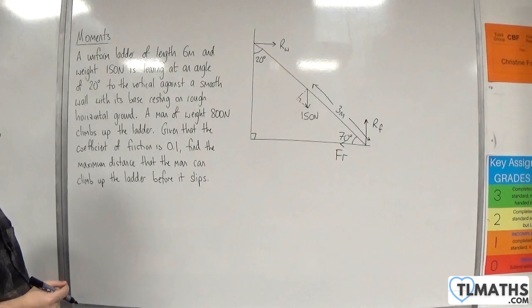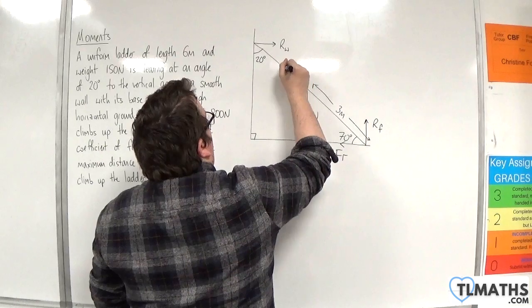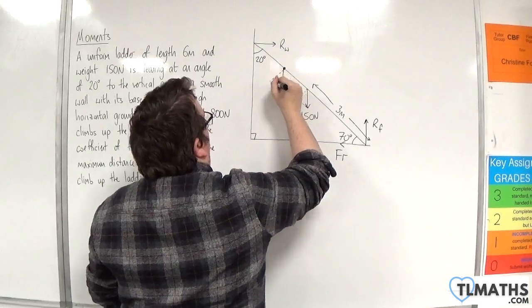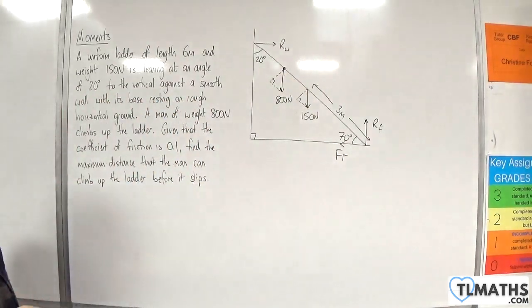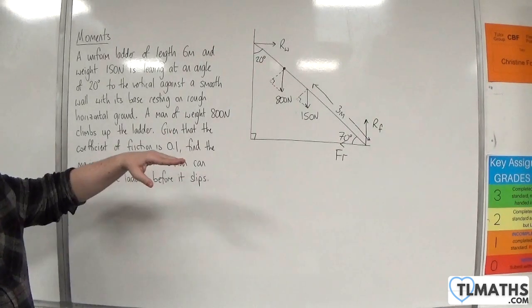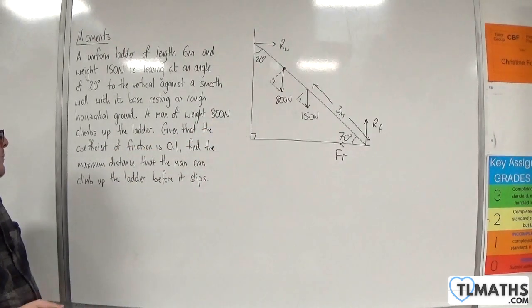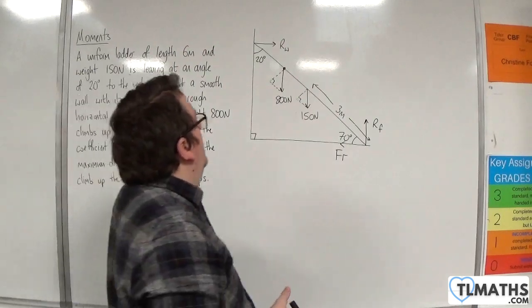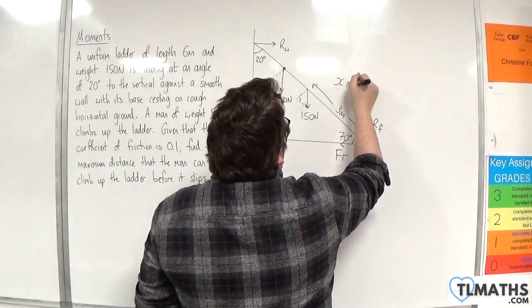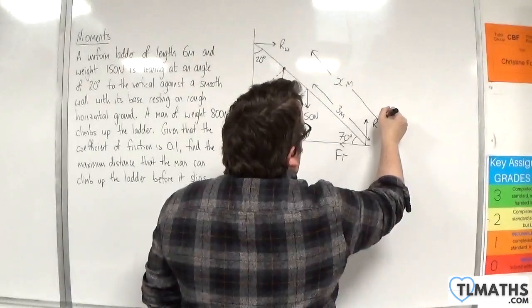A man of weight 800 newtons climbs up the ladder. So here's the man, and he's got a weight of 800 newtons. Complete that triangle as well. And we're told that the coefficient of friction between the floor and the ladder is 0.1. Find the maximum distance that the man can climb up the ladder before it slips. So we'll also need to call that distance x meters from that point down there.